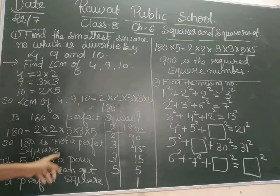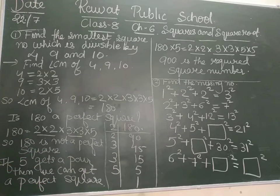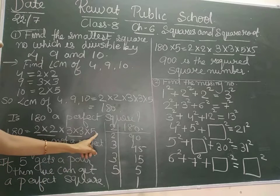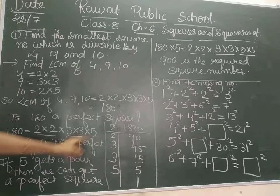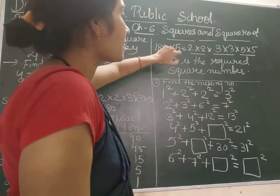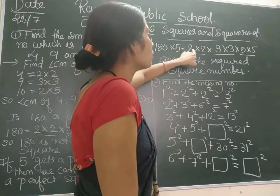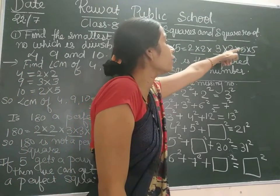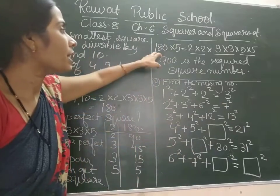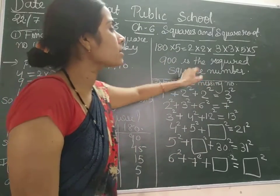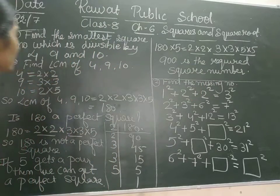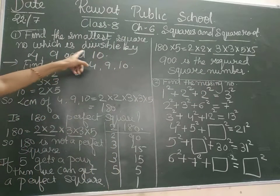So what is missing here? If we multiply 5 on both sides, then only 180 could become a perfect square. So we will multiply: 180 into 5 is equal to 2 into 2 into 3 into 3 into 5 into 5. So 180 into 5 is 900. So 900 is the required square number which is divisible by 4, 9 and 10.